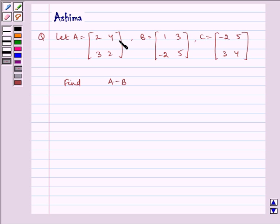Let A equal the matrix [2, 4; 3, 2], B equal [1, 3; -2, 5], and C equal [-2, 5; 3, 4]. Find A minus B.